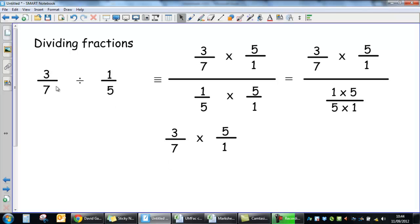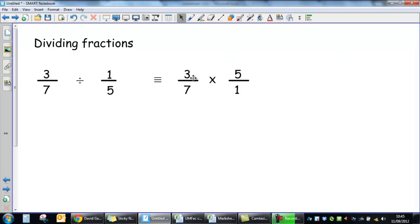So 3 over 7 divided by 1 over 5 is equivalent to 3 over 7 multiplied by 5 over 1. So keeping the first fraction alone, changing the sign to a multiply, and flipping the second fraction over is a shortcut for a longer method that is mathematically accurate. But I think we'll stick to the shortcut.